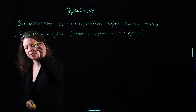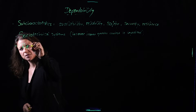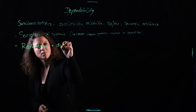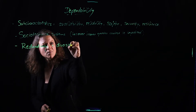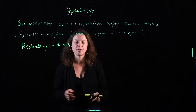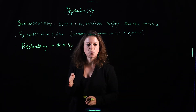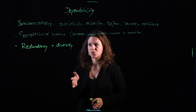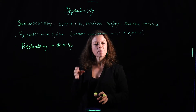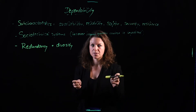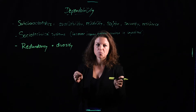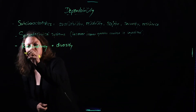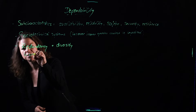Those two principles are redundancy and diversity. Redundancy means I don't only have one version of that database backend, because if that one ever gets cut off or compromised, I'm in big trouble. Instead, I want to have a backup server somewhere. When I run my critical services and see there is a problem with the main server, I can just switch to the backup server. So redundancy is almost like having clones of parts of my system.